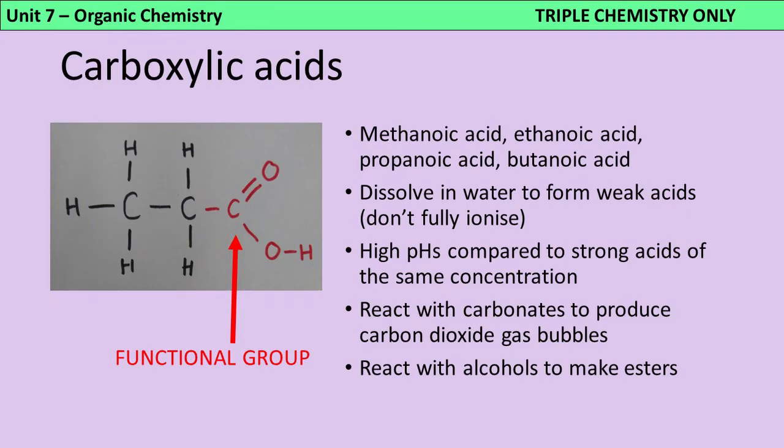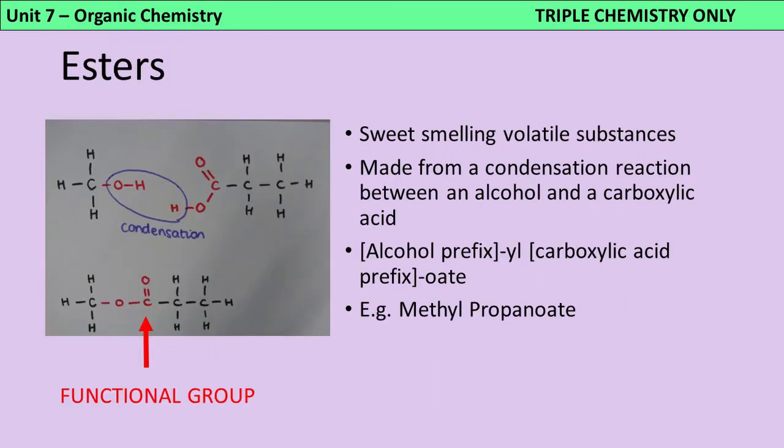Carboxylic acids also react with alcohols to make esters, which are another homologous series. Esters are sweet-smelling volatile substances, so they're often used as either perfumes or as flavors because basically they smell nice, they taste nice, they evaporate really easily. They're made from a condensation reaction between an alcohol and a carboxylic acid. So you can see in my picture here, I've got some methanol and I've also got some propanoic acid, and what's happening is that one of those loses a hydrogen and one of those loses an OH, and together that makes a water molecule, hence condensation, and you're going to name those esters based on the name of the alcohol and the name of the carboxylic acid, so here we've got methyl propanoate.